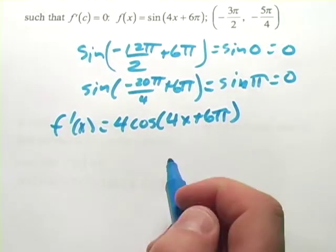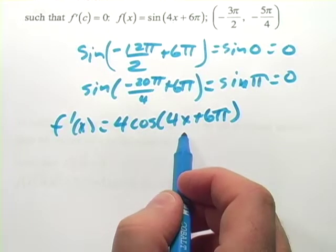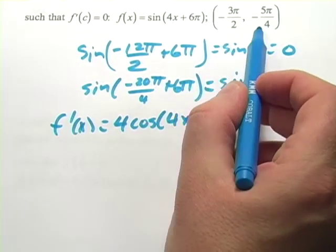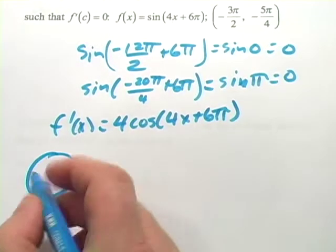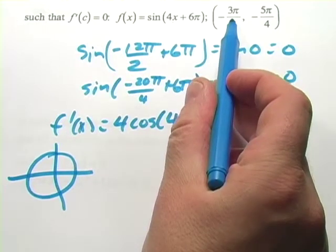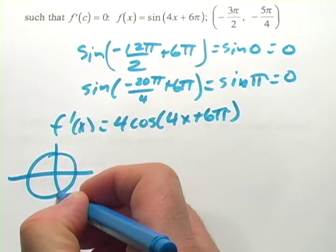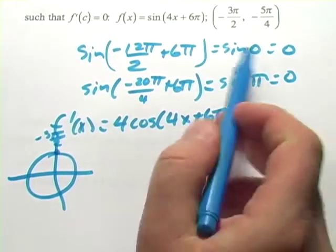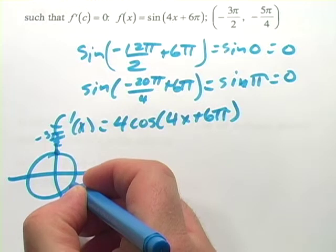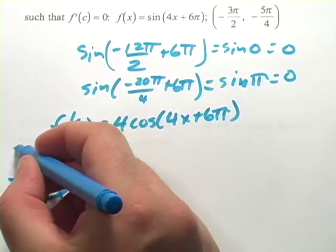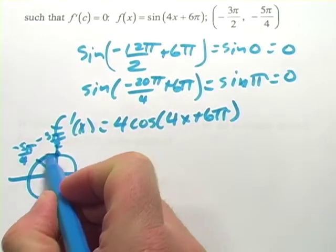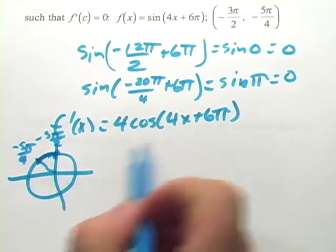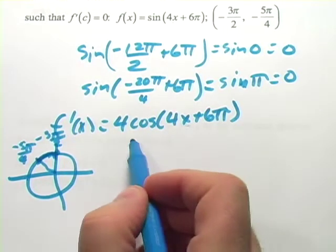We want to consider the interval we're looking at: from negative 3π/2 to negative 5π/4. If you sketch a unit circle, going around the negative direction, negative 3π/2 lands at one point and negative 5π/4 at another. Converting to eighths: that's negative 12π/8 and negative 10π/8. So our interval is just that small chunk, and we want a value in there that makes the derivative zero.